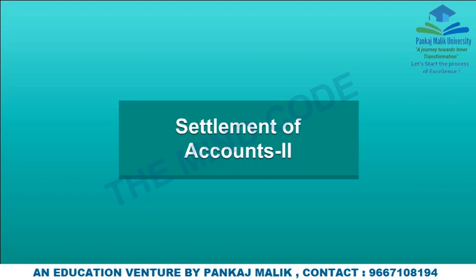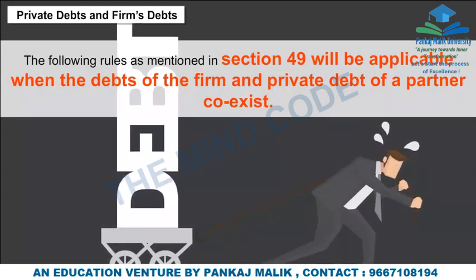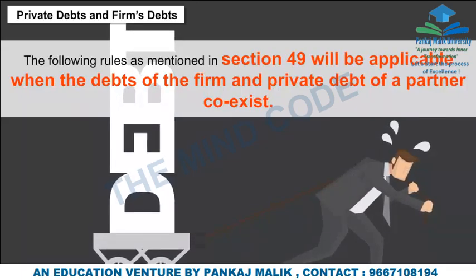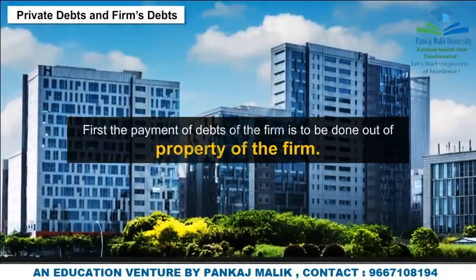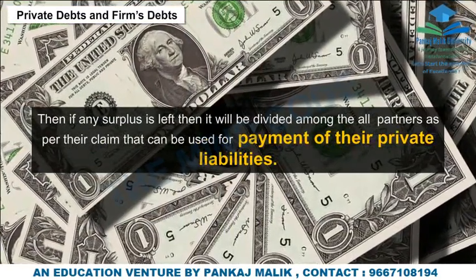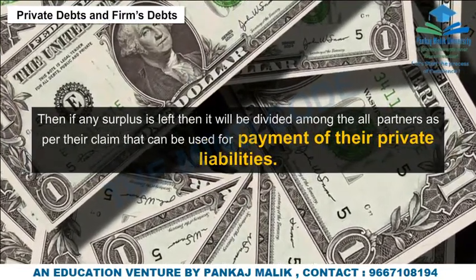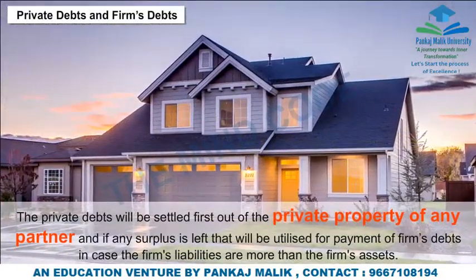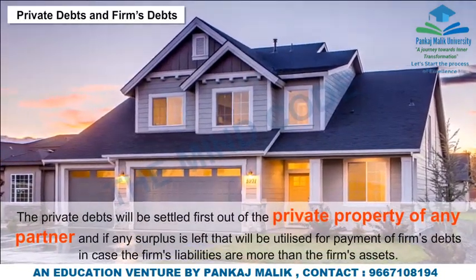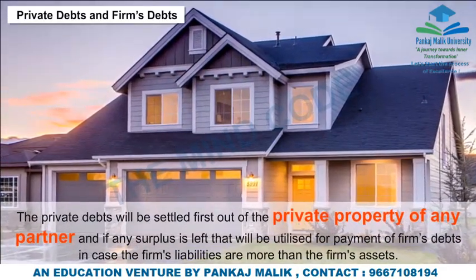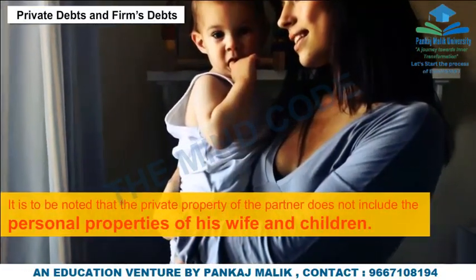Settlement of Accounts — Private Debts and Firm Debts: The following rules as mentioned in Section 49 apply when the debts of the firm and private debts of a partner coexist. First, the payment of firm debts is to be done out of the property of the firm. If any surplus is left, it will be divided among all partners as per their claim, which can be used for payment of their private liabilities. The private debts will be settled first out of the private property of the partner, and if any surplus remains, that will be utilized for payment of the firm's debts when the firm's liabilities exceed its assets. The private property of a partner does not include the personal property of his wife and children.